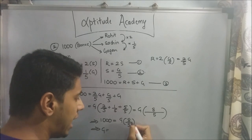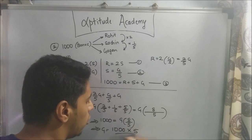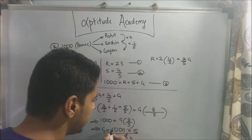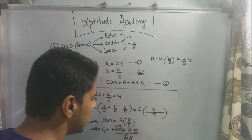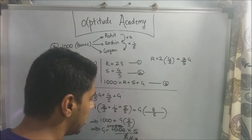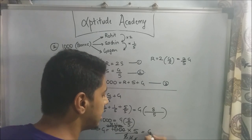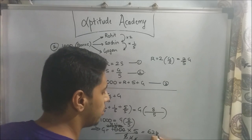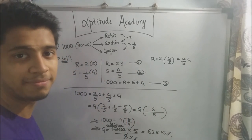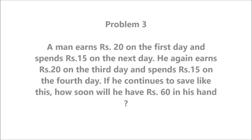Solving for g: g = 1,000 × 5/8 = 625 rupees. This is the amount given to Gagan.